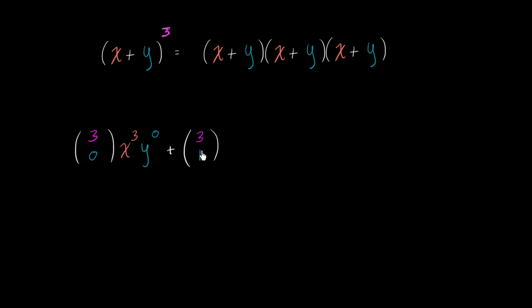And so if you're picking one y, that means you're picking two x's. So it's x squared times y to the one.